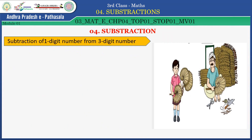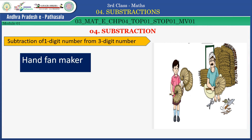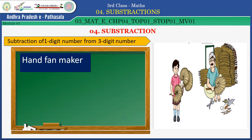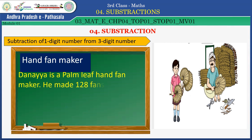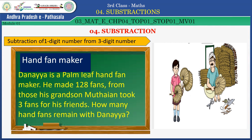Subtraction of one-digit number from a three-digit number. Children, observe the picture. Hand fan maker — who is he? Dhanaya is a palm leaf hand fan maker. He made 128 fans. From those, his grandson Murtaya took three fans for his friends. How many hand fans remain with Dhanaya? Children, think and say the correct answer.